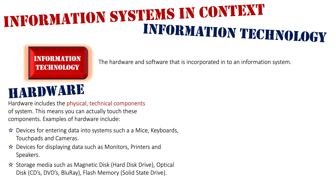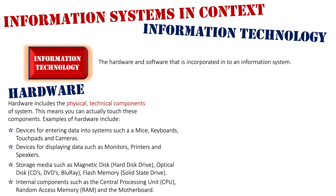Finally, we also have the things inside my computer. Although I can't physically touch them at the moment, they still exist inside and I could touch them. Things such as internal components like the CPU, the RAM, and the motherboard are all hardware. Transmission media as well — my switches, my routers, and network cabling are also classified as hardware.